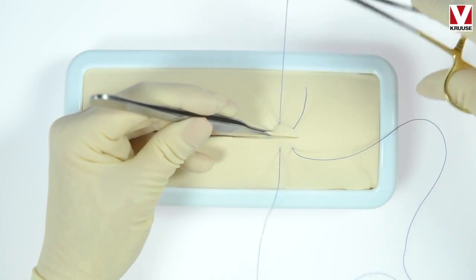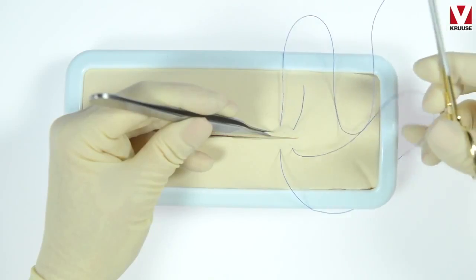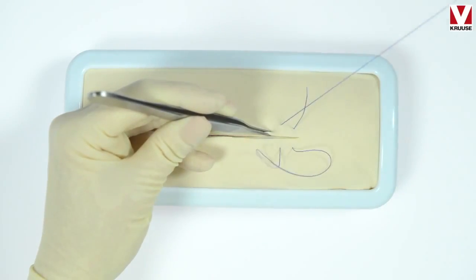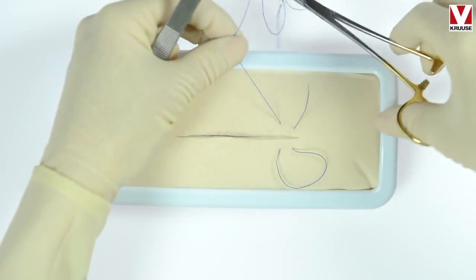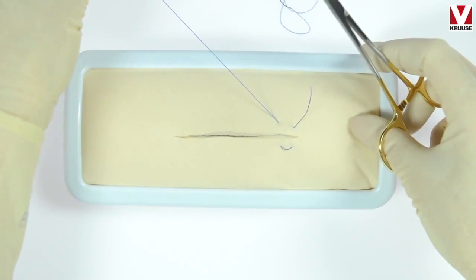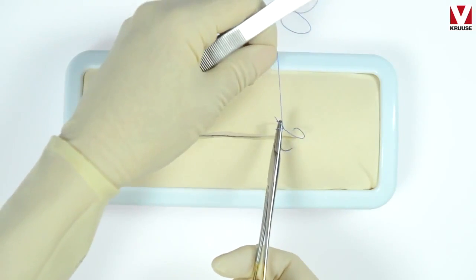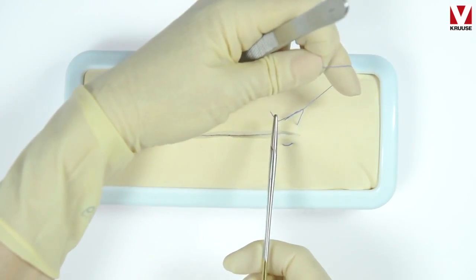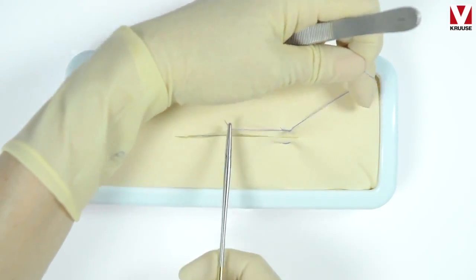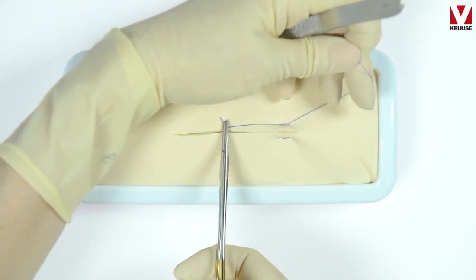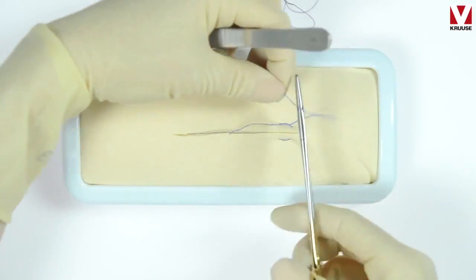So here you see the far near near pattern. Now I'm tying the suture with a surgeon knot 211. As you see here, when I tighten the suture, the suture just slips a little.